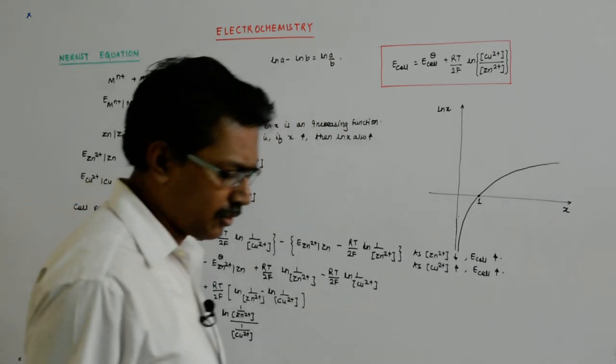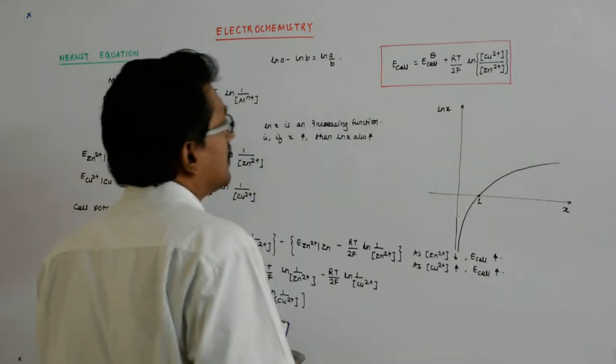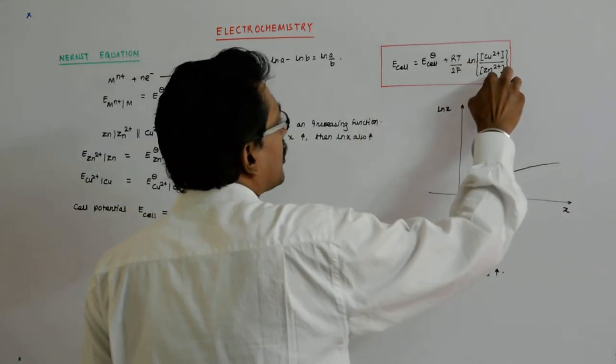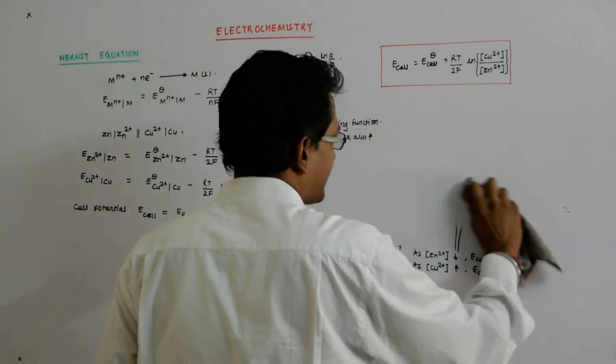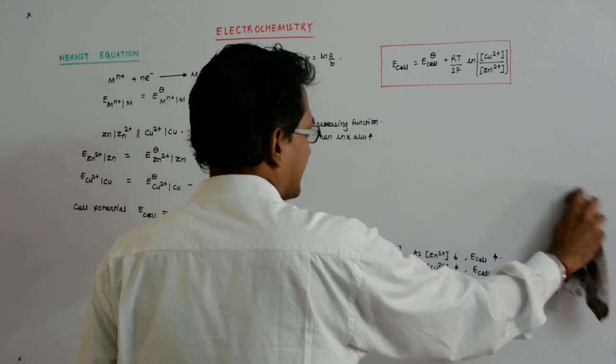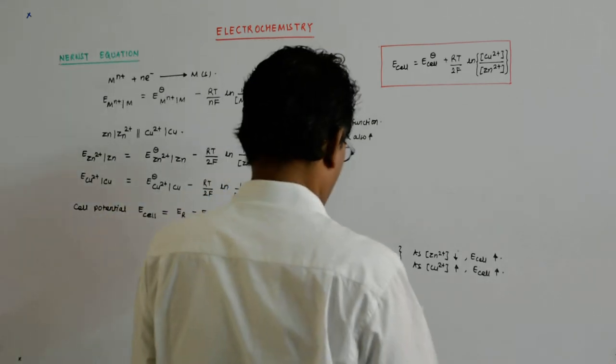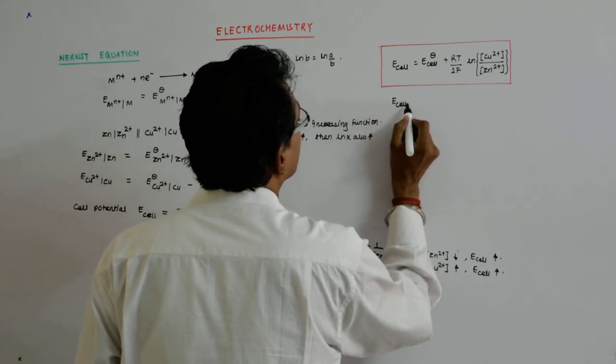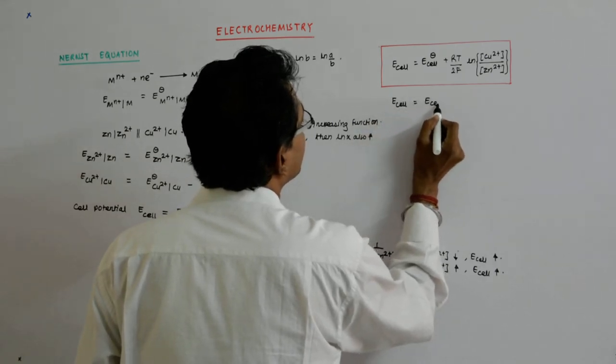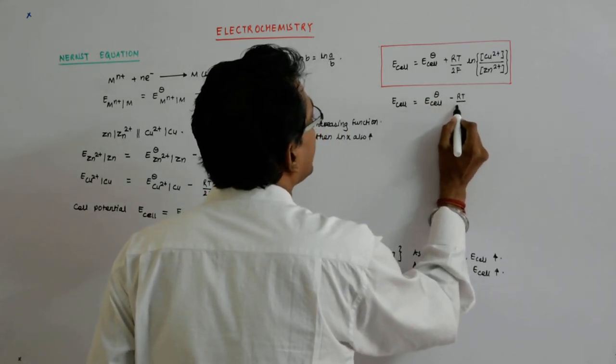So it becomes E_right upon E_left. I could also represent it like this: E_cell is equal to E_cell standard minus RT upon 2F ln(Zn²⁺).